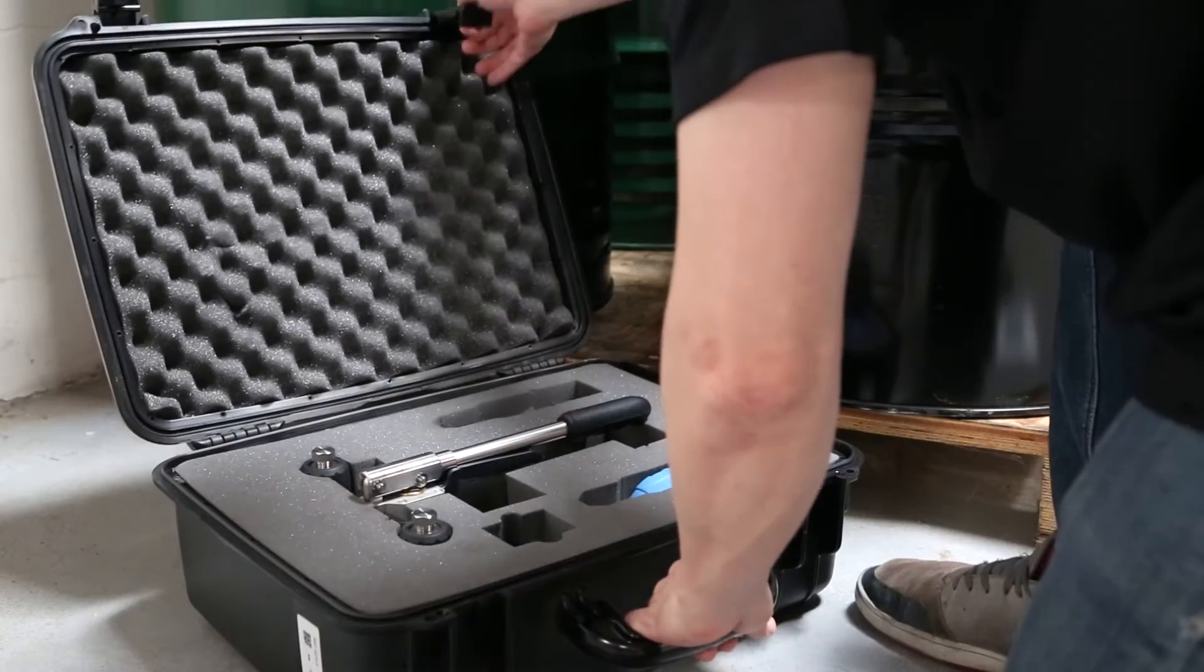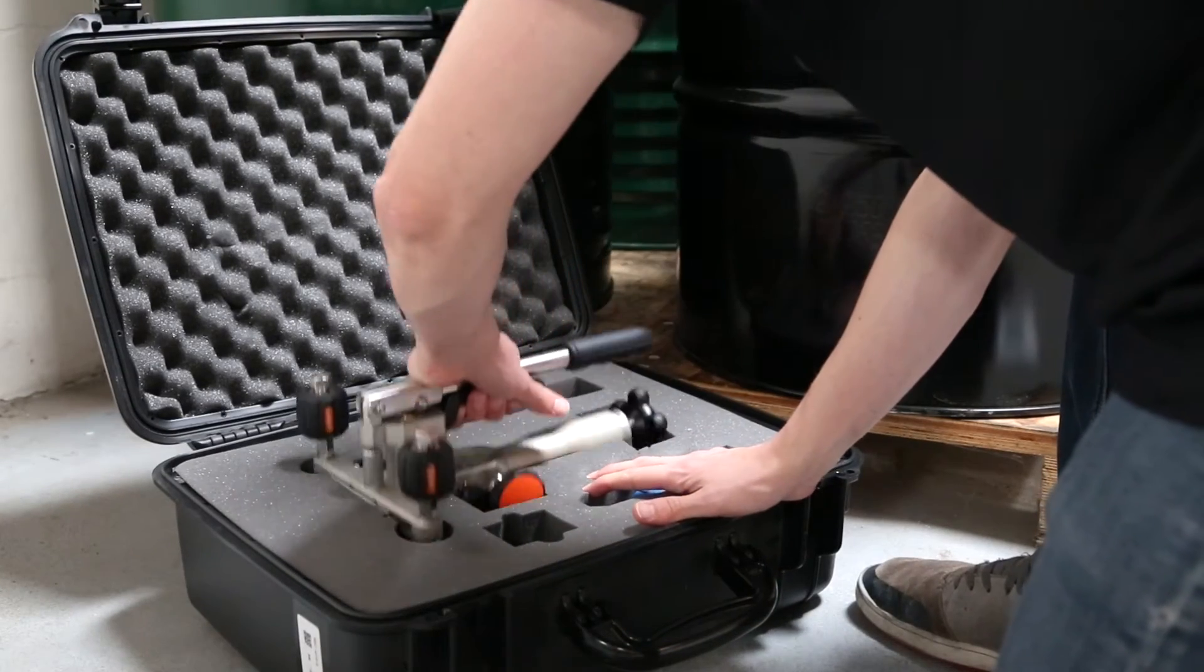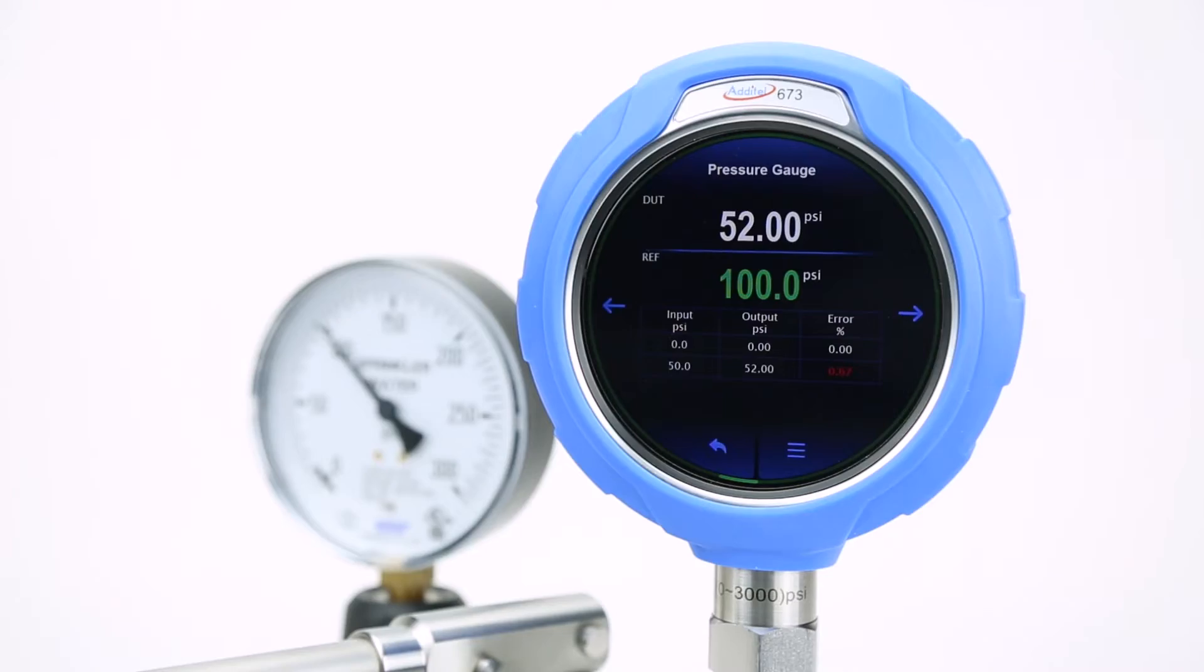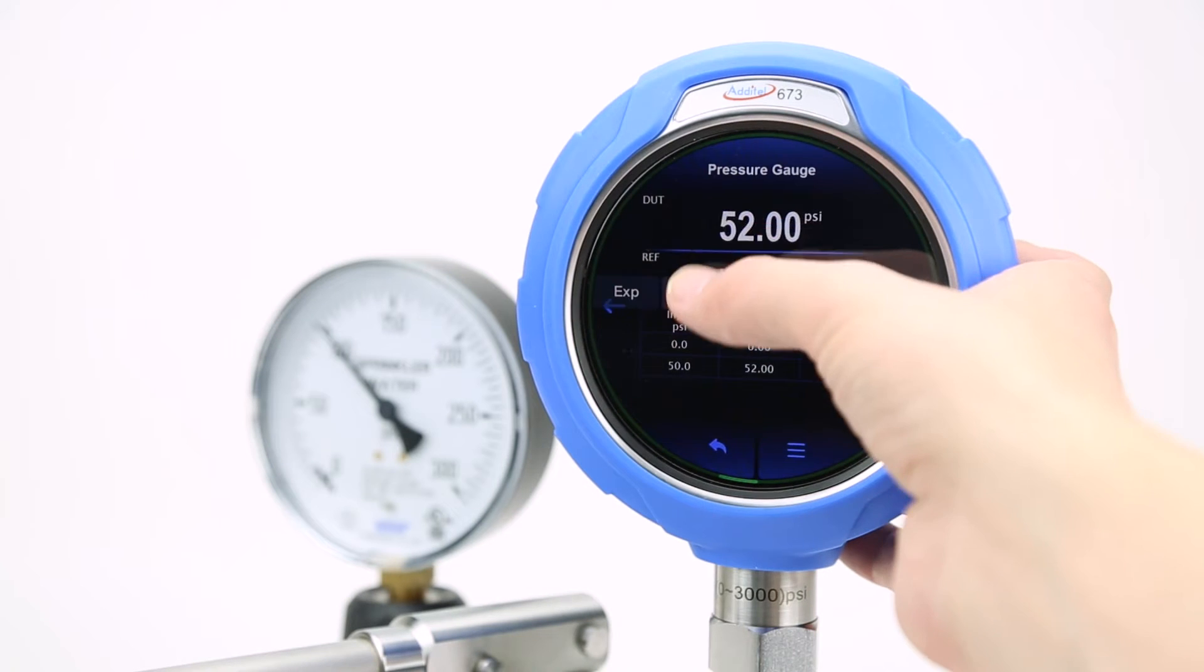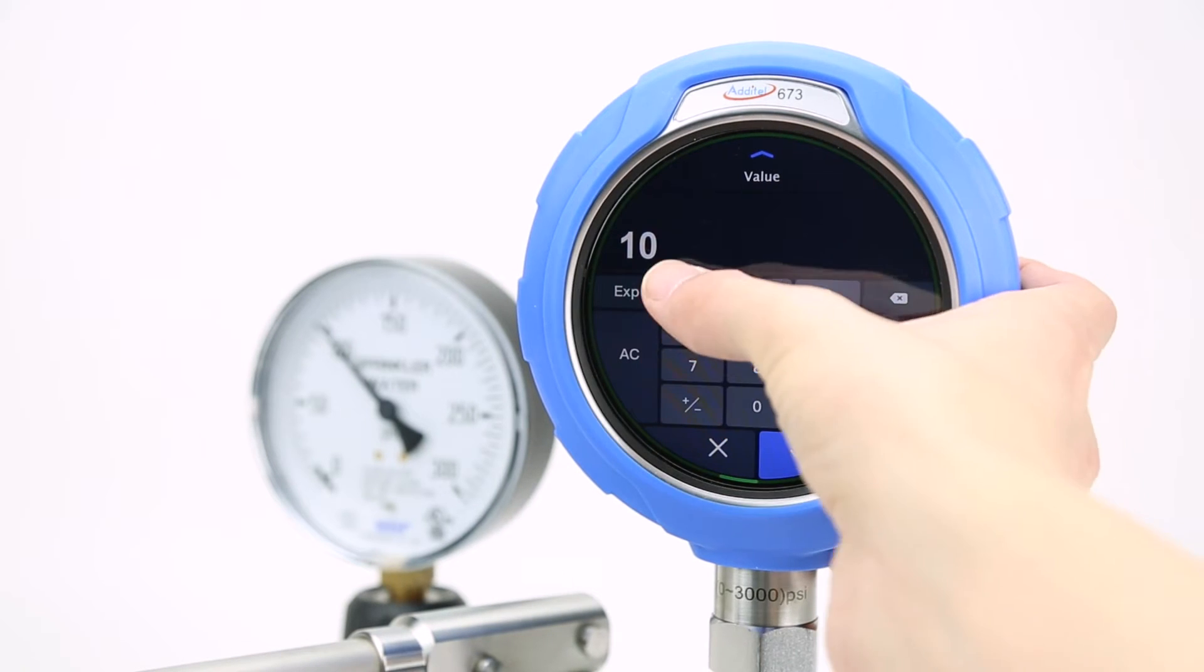Pressure pumps will usually have at least two pressure ports for both the DUT and reference, and are often used in field work due to being both portable and reliable. Depending on the model, the reference gauge used in this setup may also feature built-in calibration programs that allow for more efficient testing and data recording.